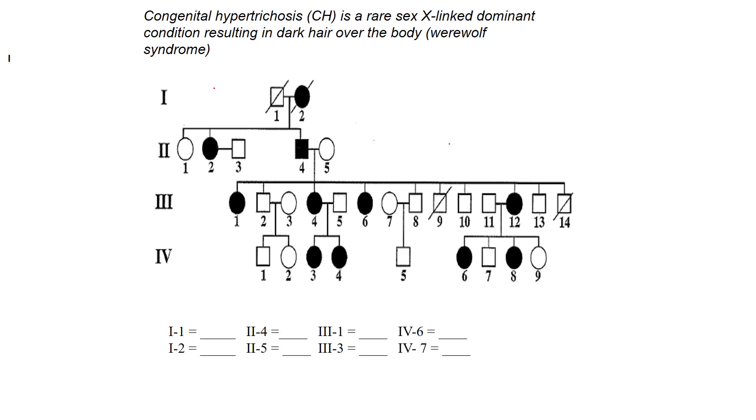So if we take a look at this, they talk about CH, also known as Werewolf Syndrome. And we've seen that in the previous chapter where there's dark hair covered over the entire body. This is a very rare sex-linked dominant condition. There's a small isolated community in Mexico that is inundated with a lot of these, well, predominantly females. And we'll see that when we take a look at some of the evidence. So here's a pedigree for that.